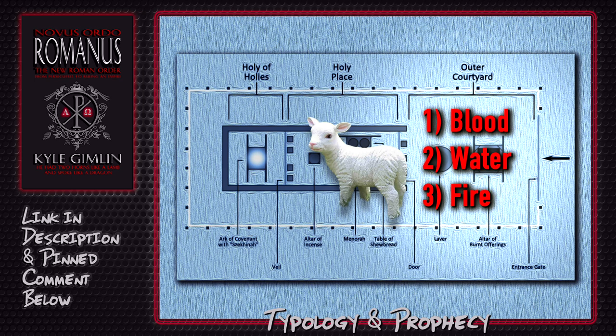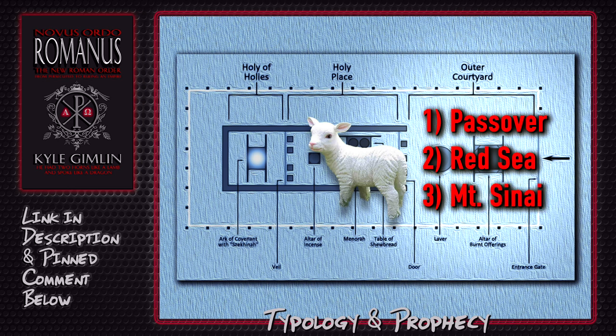I would argue that these three — blood, water, and fire — are symbolic of the Exodus and the Old Covenant. Passover was instituted in Egypt when the death angel passed over the homes where the blood of the lamb was stained on the doorpost. After they left Egypt, they came to the Red Sea — the water — which God parted and they passed through. And finally, 50 days after leaving Egypt, they came to Mount Sinai where God descended upon the mountain in fire, and the people entered into covenant with him, saying, 'All that the Lord has said, we will do.'